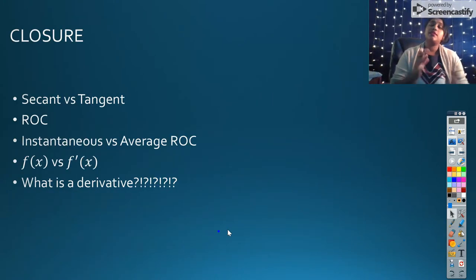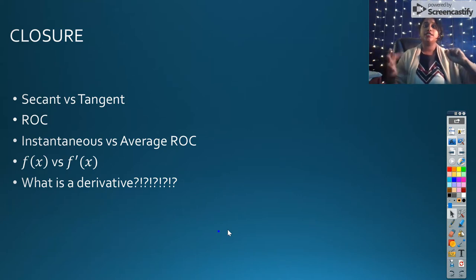So here's our wrap-up. Here's our closure. The big things you have to recognize from this is secant versus tangent. Secant hits at two points. This is what we talk about with our averages. Tangent hits at that exact one point. That is that instantaneous rate of change. That is the true definition of our derivative.